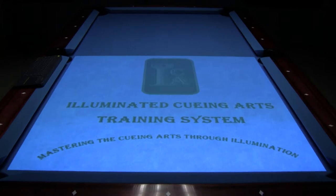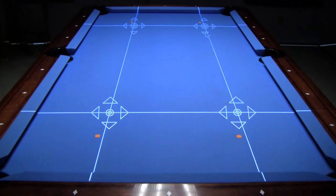Let me demonstrate how easy it is to do. When you start up ICATS for the very first time, you will see four calibration handles on your table.